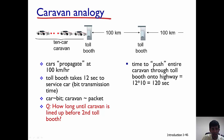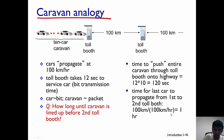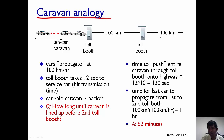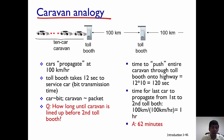Once the last car has gotten out of the tollbooth, it has to travel 100 kilometers. At 100 kilometers per hour, that takes approximately one hour. The time to push the caravan through the tollbooth — 120 seconds or 2 minutes — is equivalent to the transmission delay, whereas the time taken by the caravan to travel the 100 kilometers is the propagation delay, which is 1 hour. So the total time to move the 10-car caravan from the first tollbooth to the second is 62 minutes, with propagation delay being much higher than transmission delay.